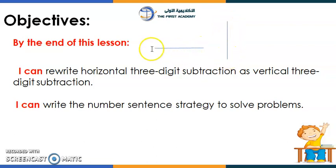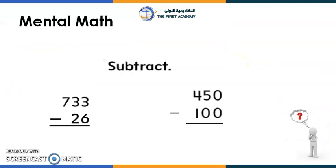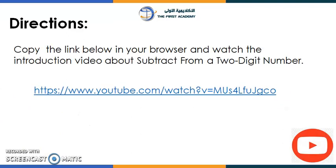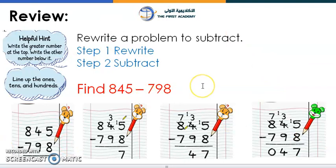Look at this line — we call it a horizontal line — and this is a vertical line. Usually we write numbers horizontally and subtract them vertically. Now let's go to mental math. I want you to subtract these numbers; remember to take your time. Watch the introduction video about subtracting from a two-digit number.